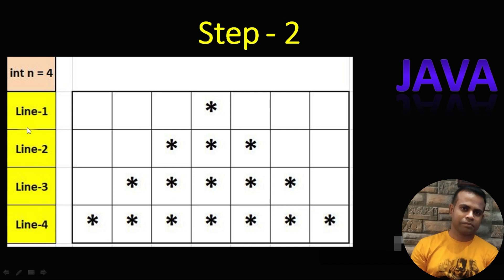You can increase the line number by using the Scanner class or BufferedReader class with a variable to collect the exact number of lines the user wants to print. For now, we take only four lines for understanding. Definitely we have to create a for loop to iterate each line — this should be our main for loop.